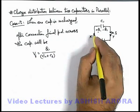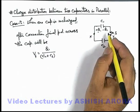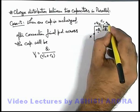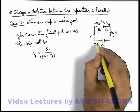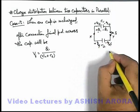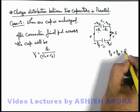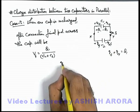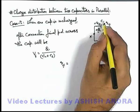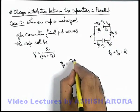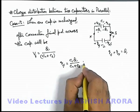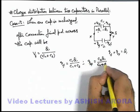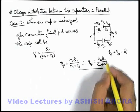Knowing the final potential difference, we can calculate the final charges on each capacitor. If the final charges are plus Q1_final and minus Q1_final on C1, and plus Q2_final and minus Q2_final on C2, then Q1_final plus Q2_final must equal Q1, since Q1 is distributed between the two. Therefore Q1_final equals C1 times Q1 divided by (C1 plus C2), and Q2_final equals C2 times Q1 divided by (C1 plus C2).